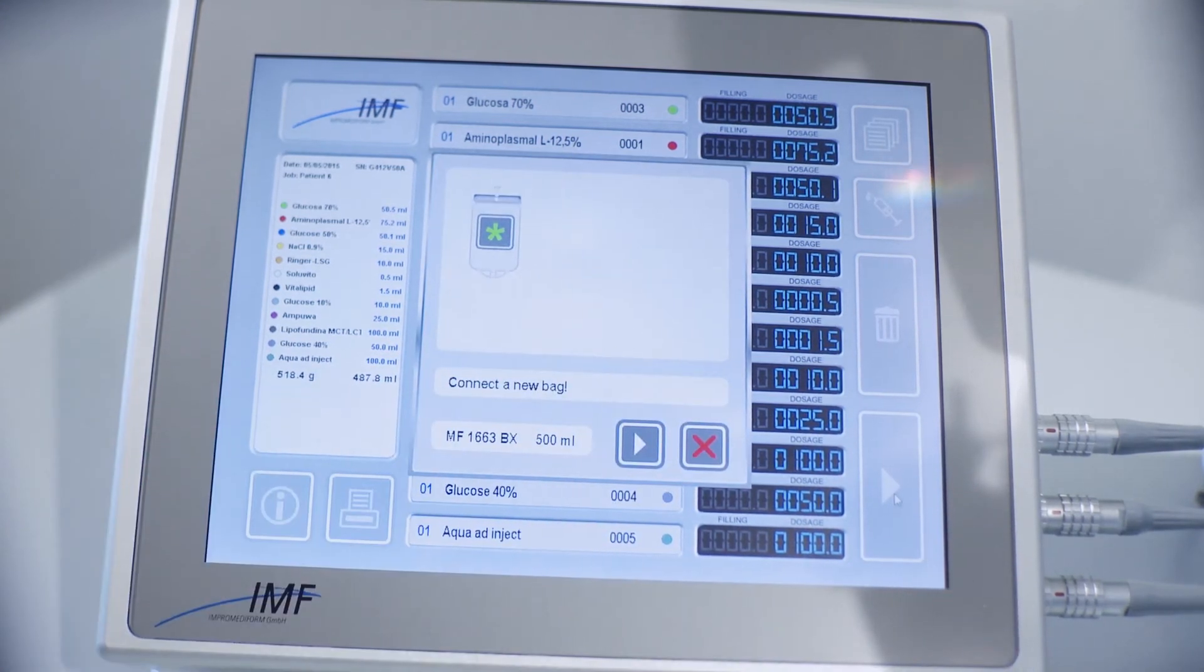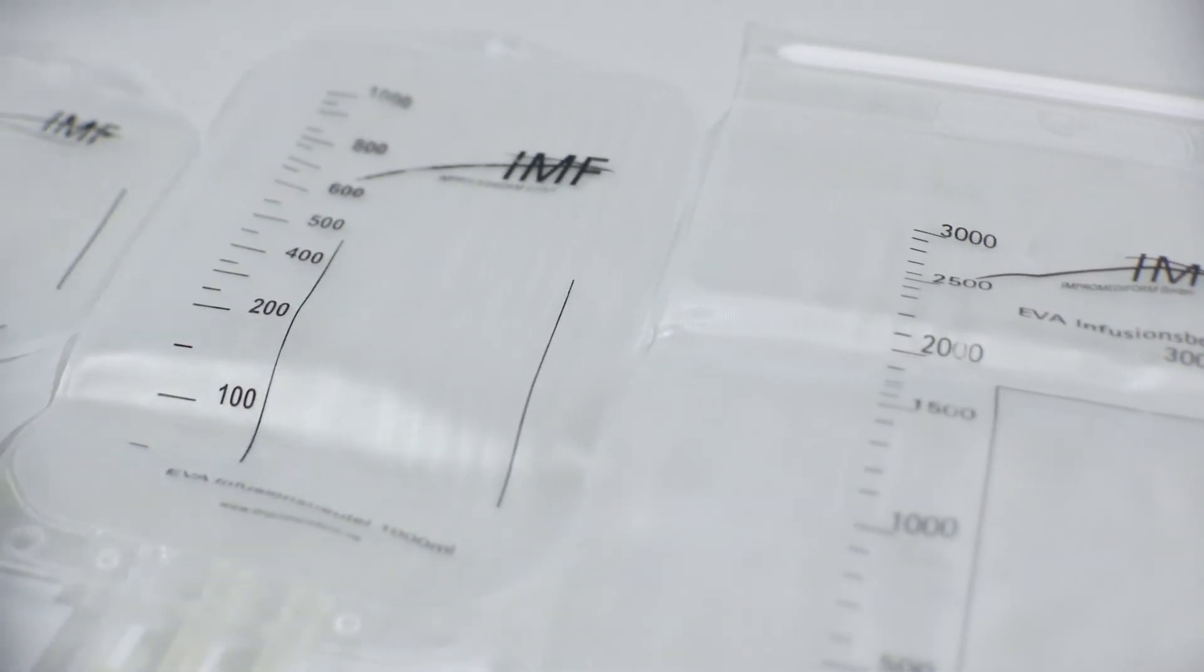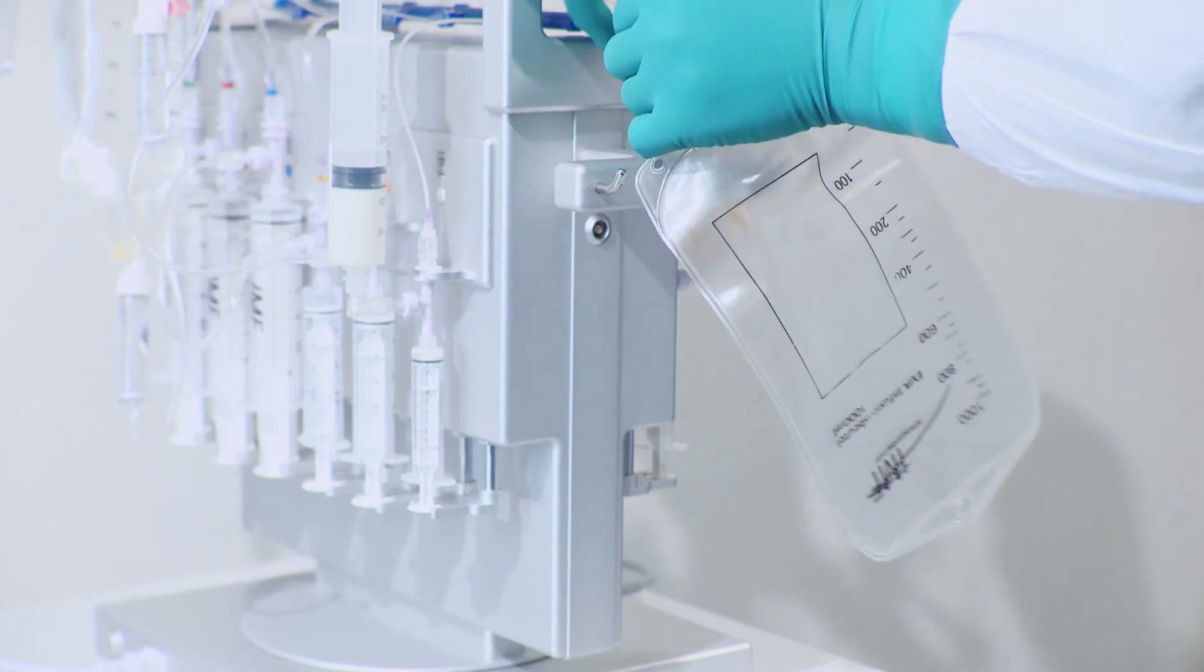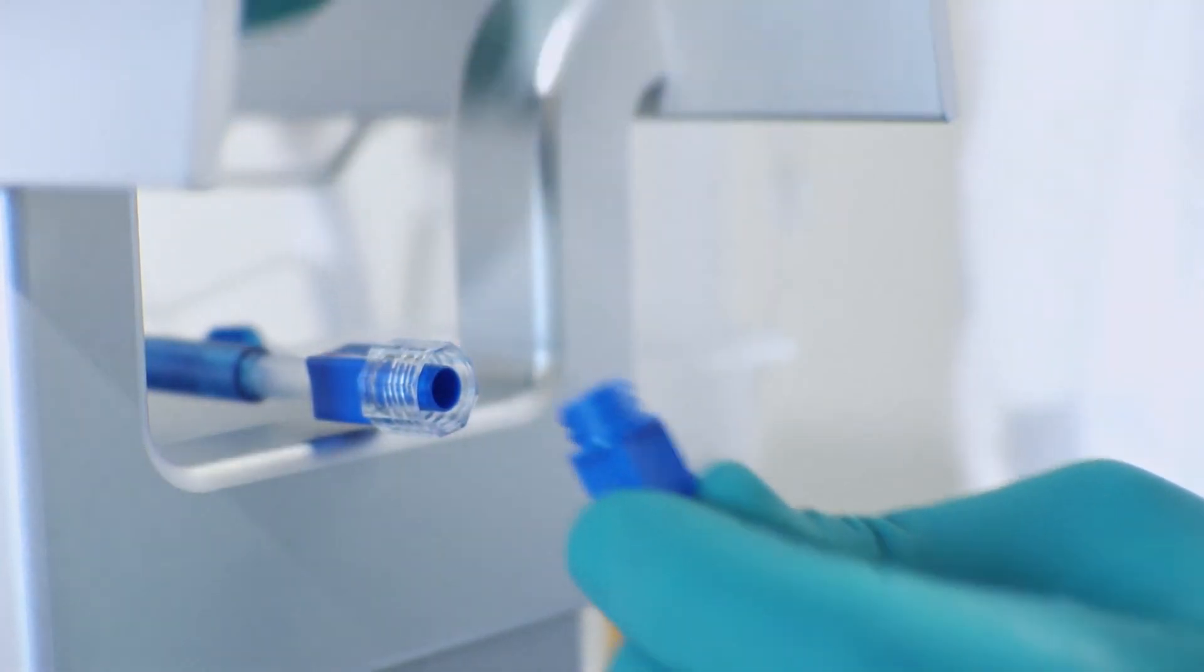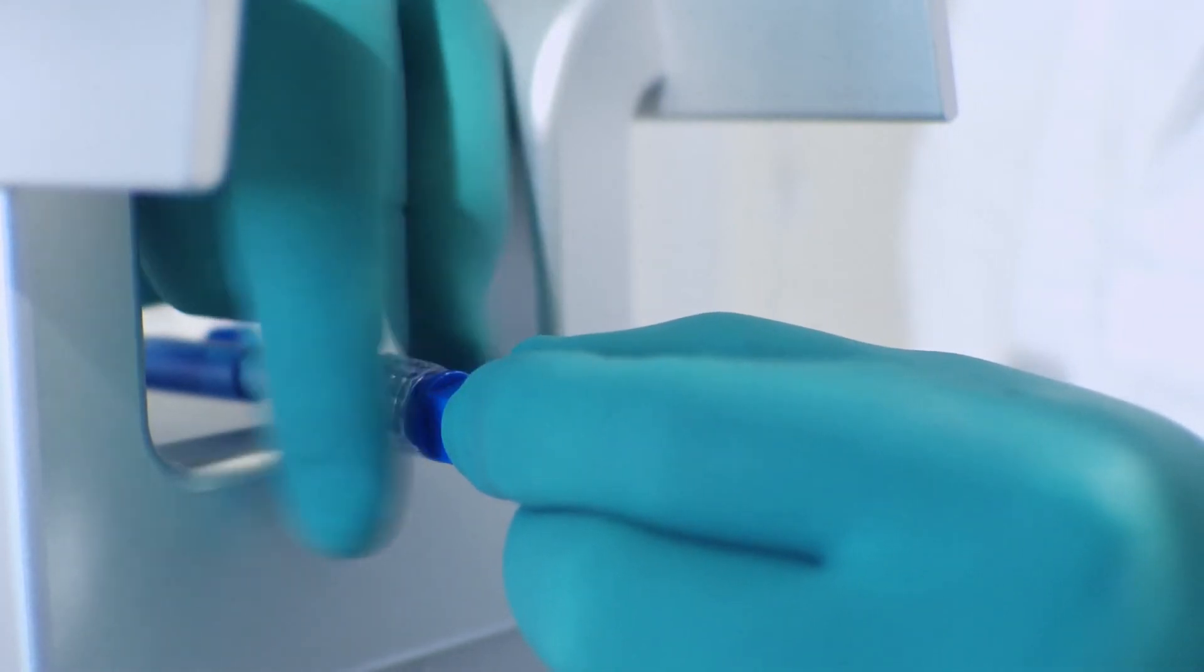Ensure the requested TPN bag is attached to the Medimix multi-compounder. Select one from our wide range of TPN bags, clear or light-protected EVA, multi-layer and dual or three-chamber EVA bags. Attach the selected bag using the special IMF rotatable nut used for facilitating closing and opening of the bag to the central line.